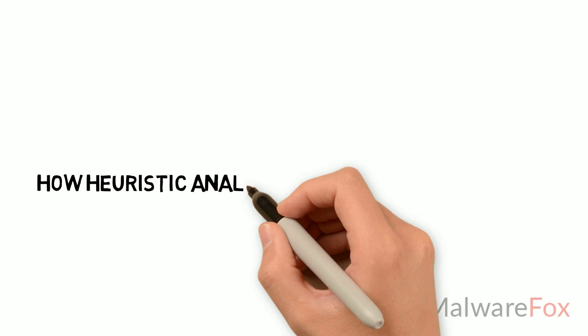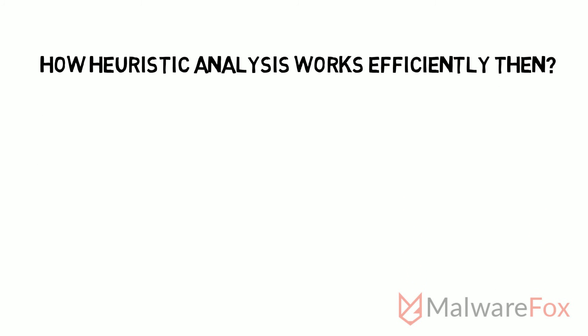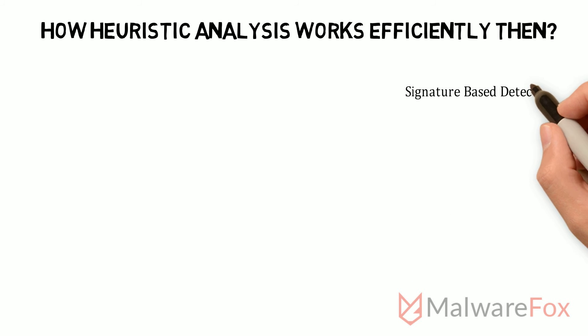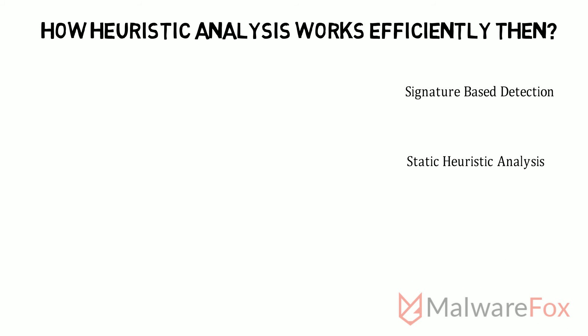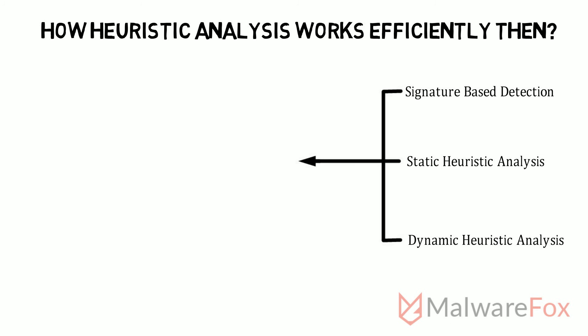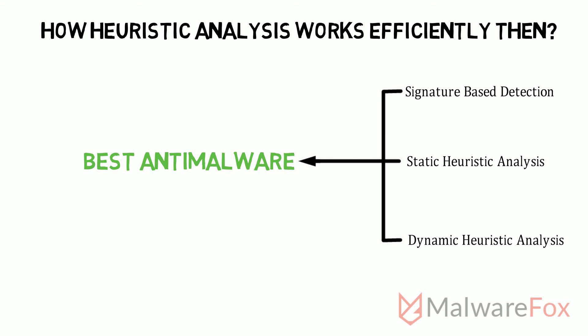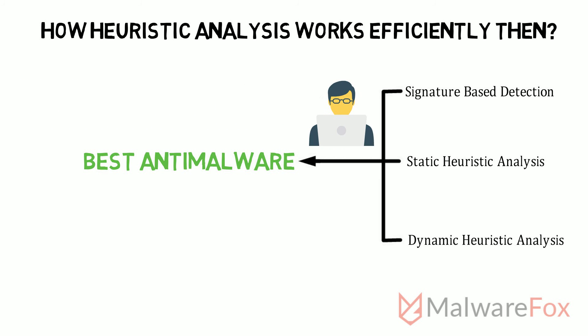How does heuristic analysis work efficiently then? To make anti-malware fully efficient, it should use all these methods in better coordination: signature-based detection, static heuristic-based detection, and dynamic heuristic-based detection. None of these methods are foolproof — they each have some errors. The best anti-malware minimizes these errors and uses them in perfect tuning, with security professionals carefully testing and setting that tuning.